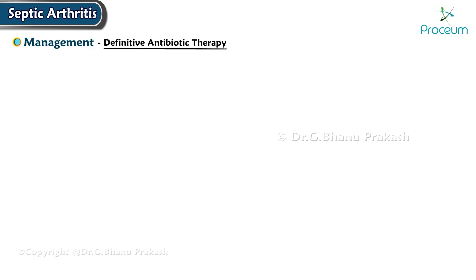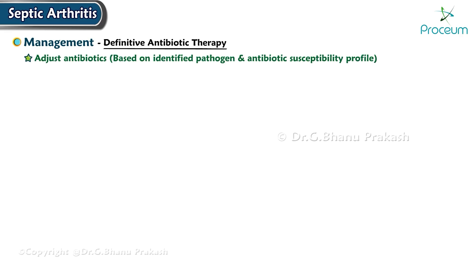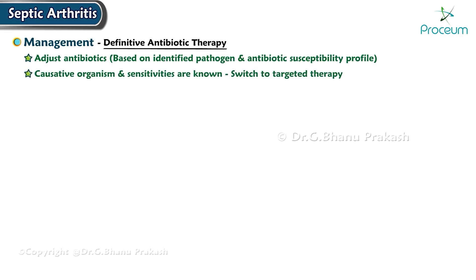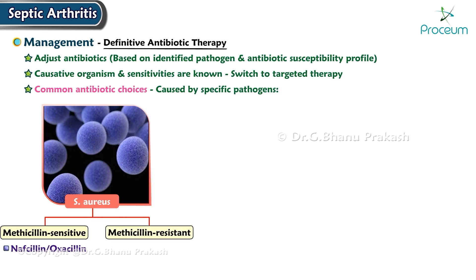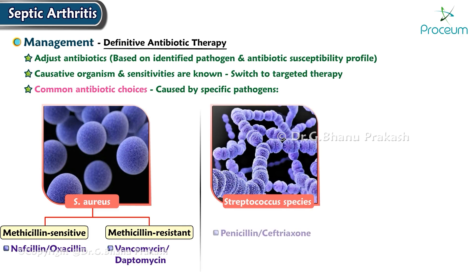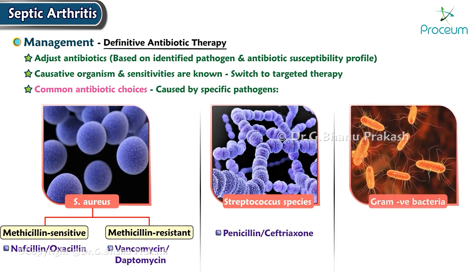Definitive antibiotic therapy involves adjusting antibiotics based on the identified pathogen and its susceptibility profile. Common choices for specific pathogens include: for methicillin-sensitive Staphylococcus aureus — nafcillin or oxacillin; for methicillin-resistant S. aureus — vancomycin or daptomycin; for Streptococcus species — penicillin or ceftriaxone; for gram-negative bacteria — ceftriaxone or cefepime.